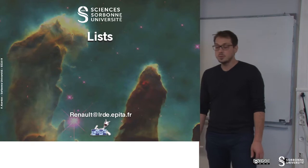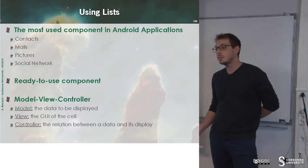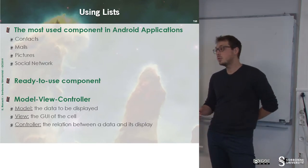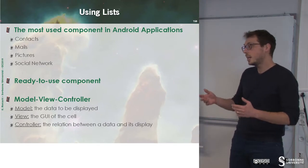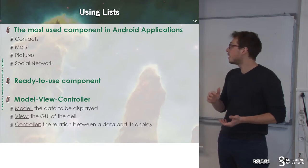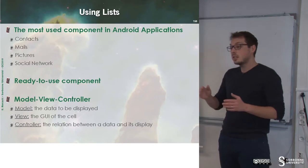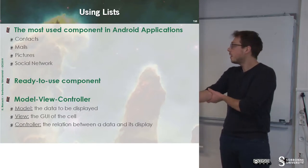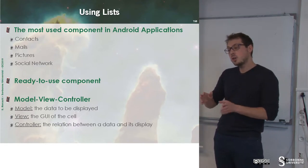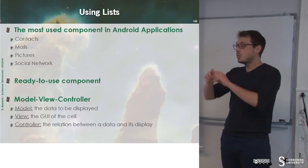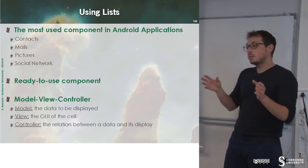In this chapter we will learn to manage lists. Lists are an important component in Android, because they are useful for displaying contacts and many things we want to display in a consistent manner. For instance, pictures are displayed through lists, social networks are displayed through lists, and so on. It's a ready-to-use component and we will learn how to manage it to have a dedicated view for each row of the list.